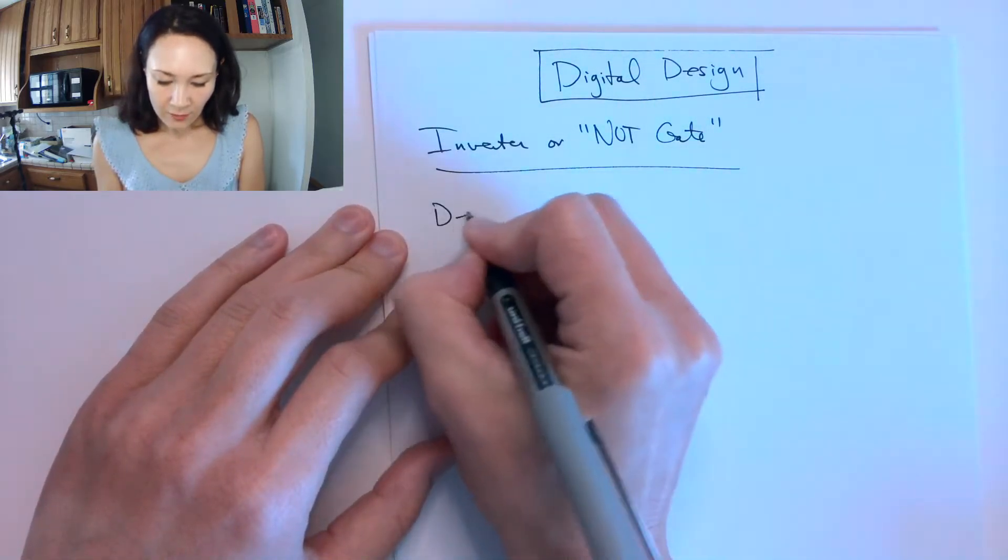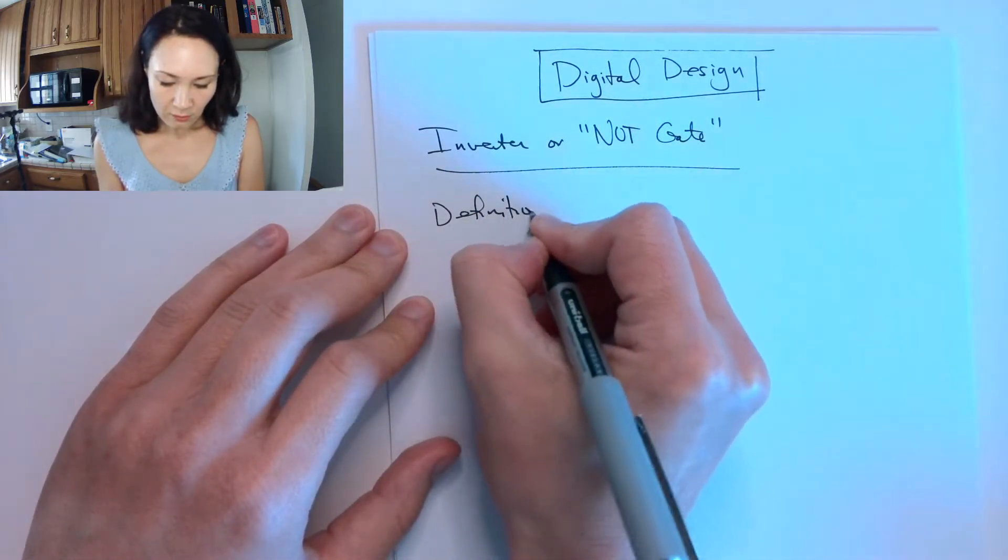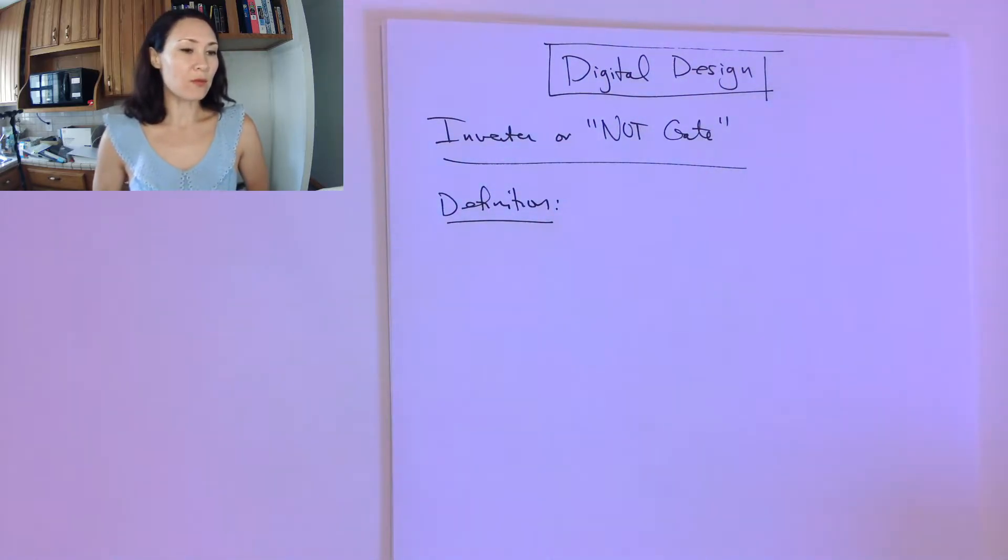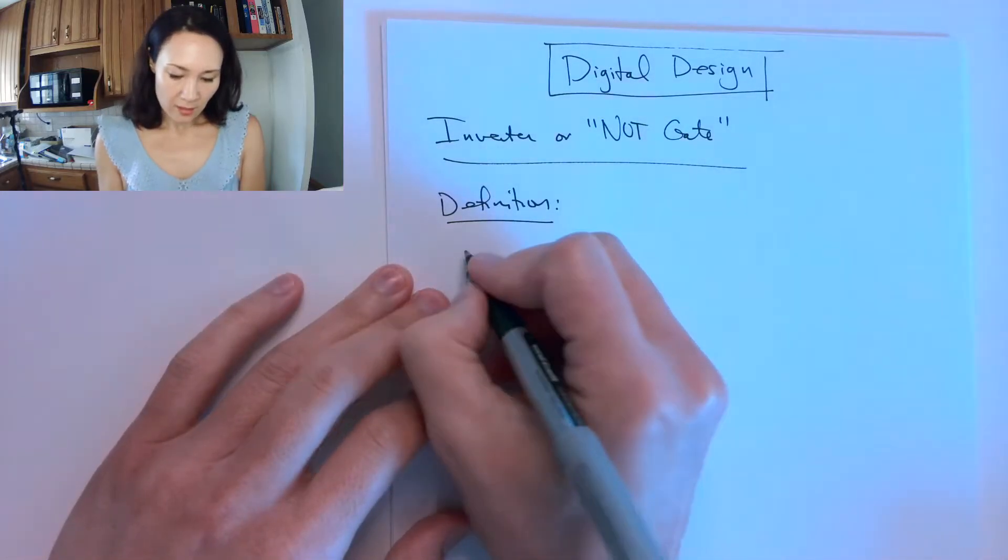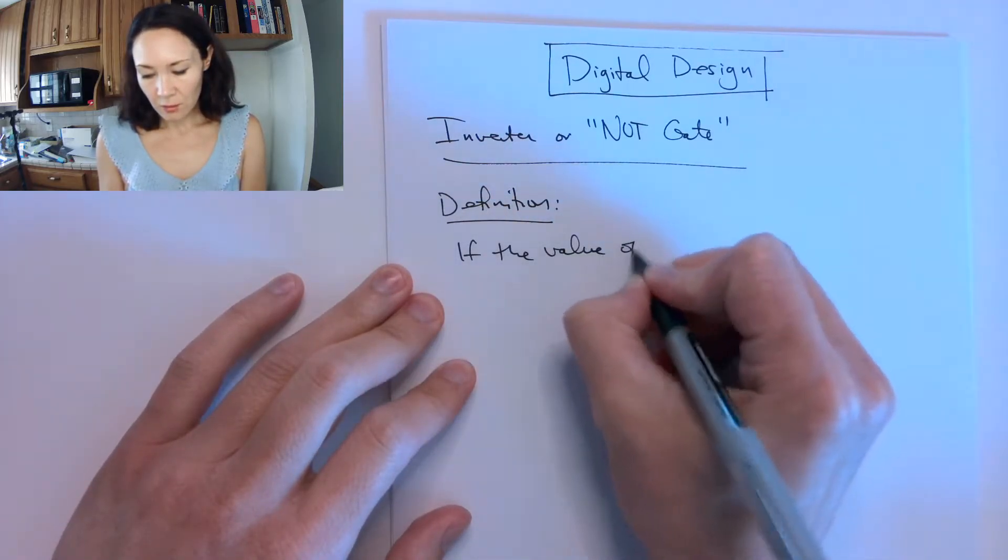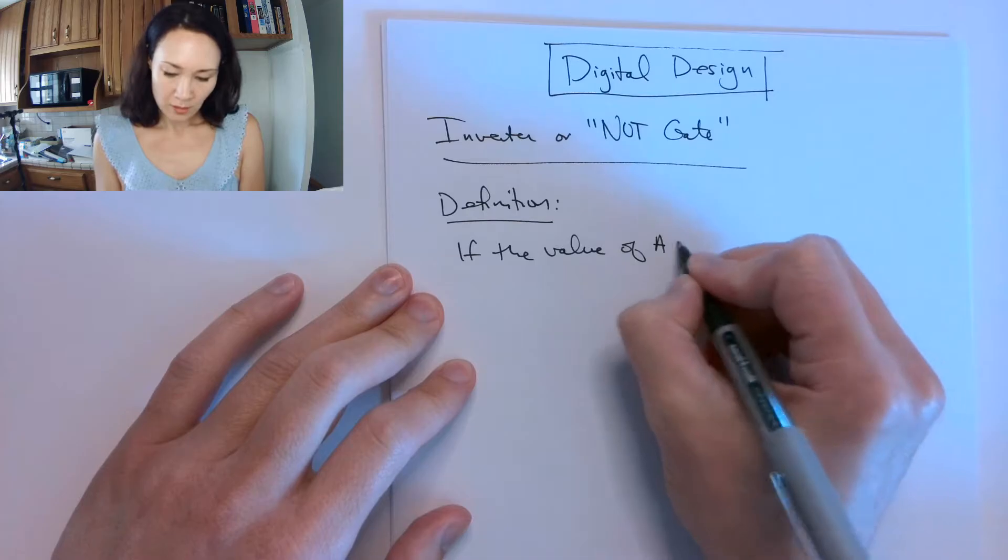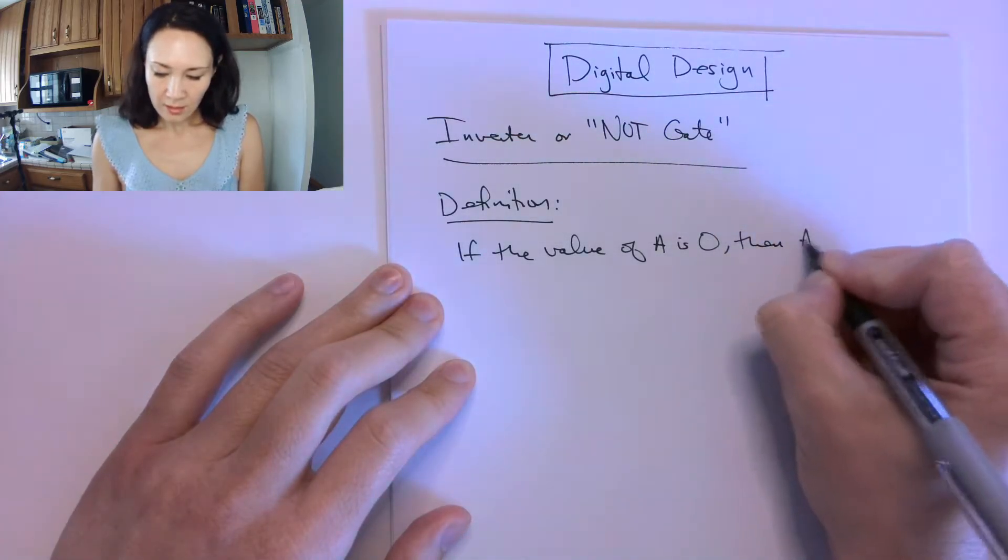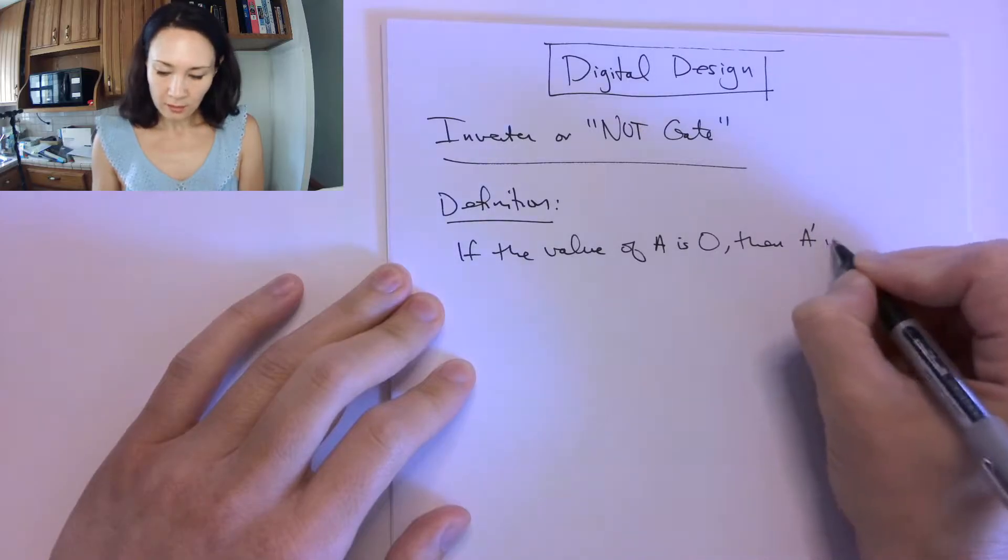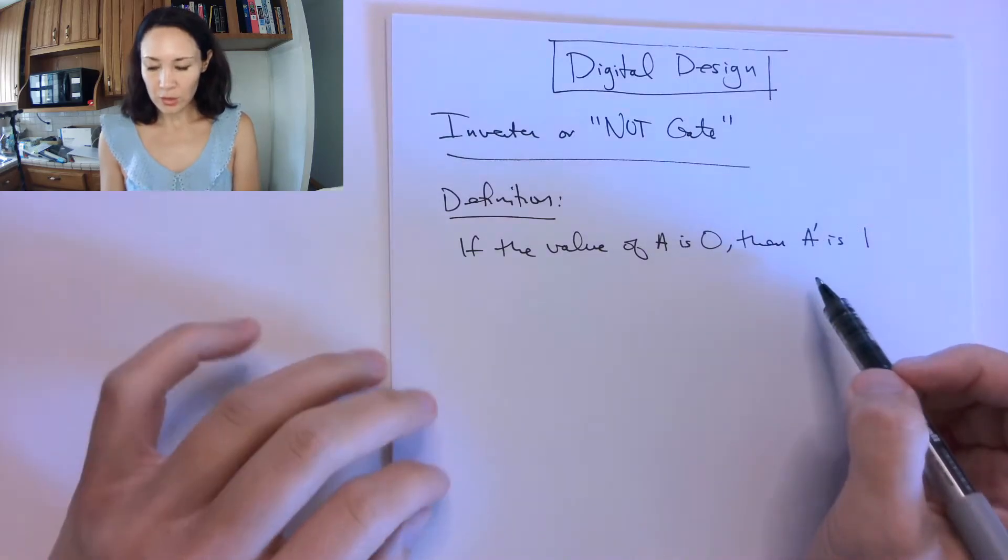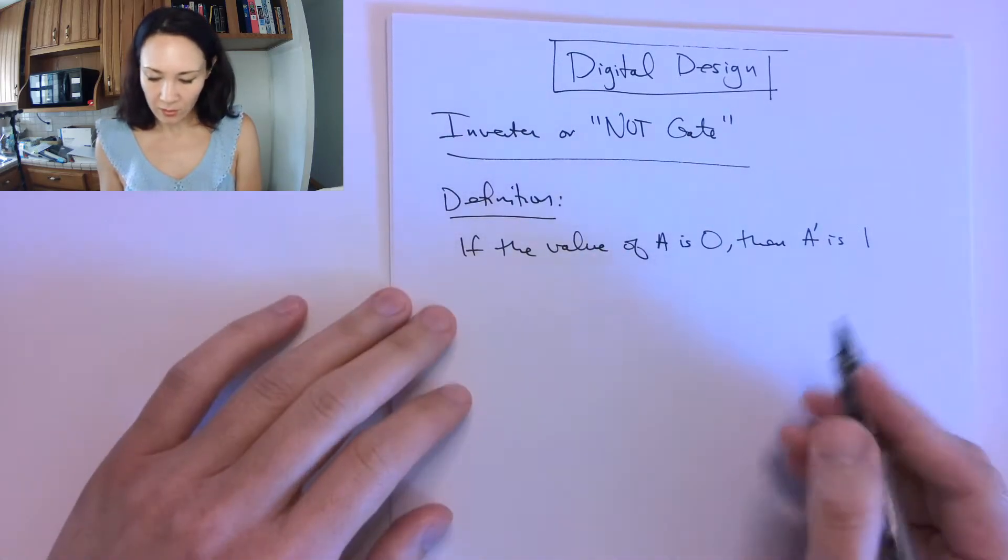Okay, so the definition, and you guys know this from when we learned ones and twos complement for representing negative numbers, is if the value of A is 0, then A' is 1. Okay, so this NOT function is implemented by the NOT gate.